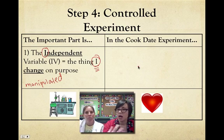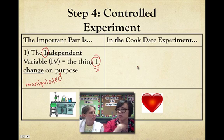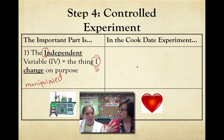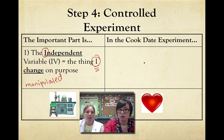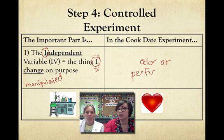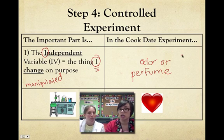Let's think about this in our experiment. We're experimenting on Ms. Cook — she wants a date for Friday night. What would we be changing in the experiment? What we're changing is her odor — we're going to put some perfume on her. So the independent variable is odor or perfume. Remember, if you're doing the experiment, the IV is the thing you're changing to see whether or not that's what's causing the problem.